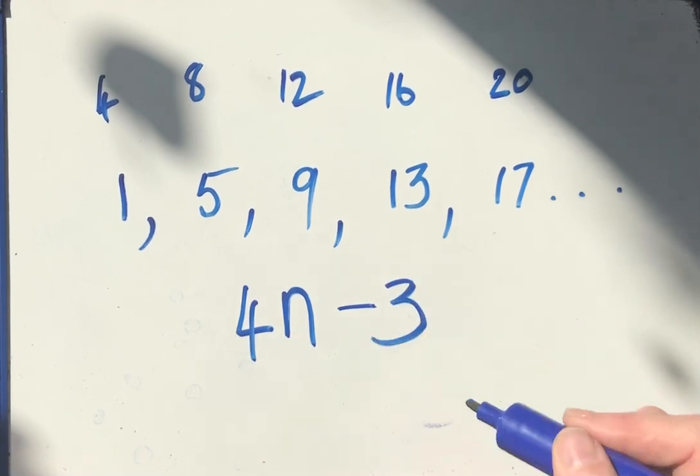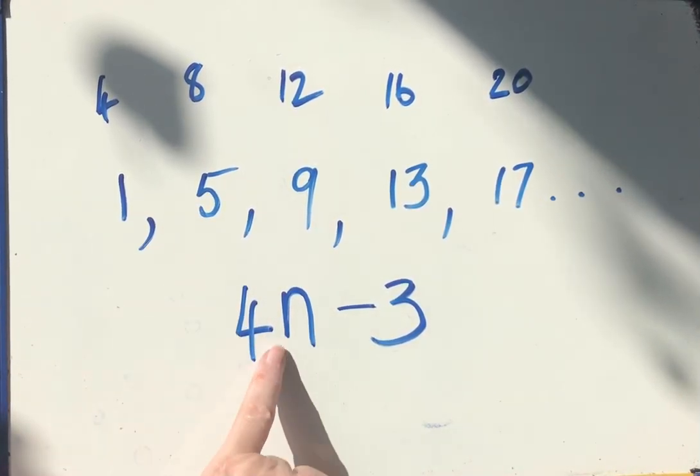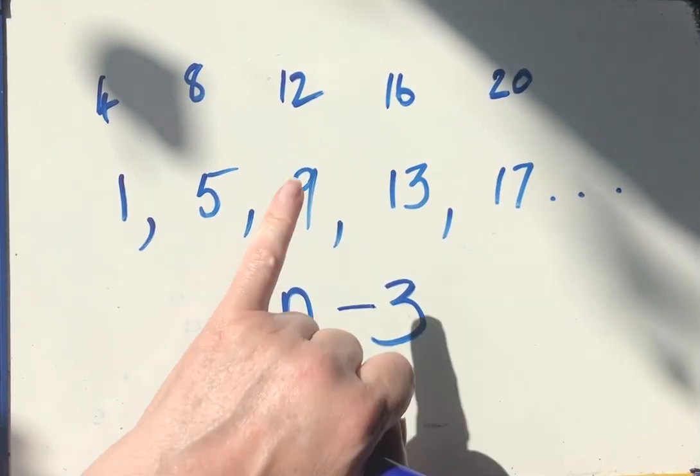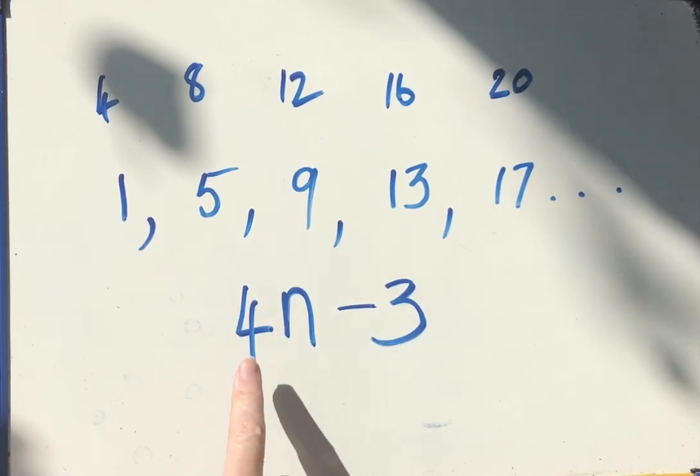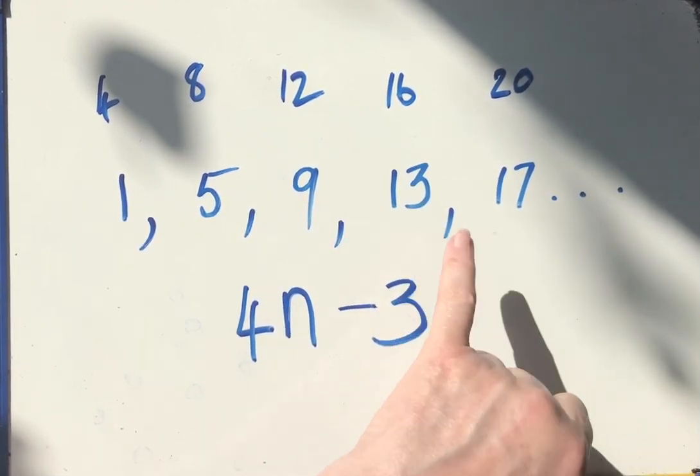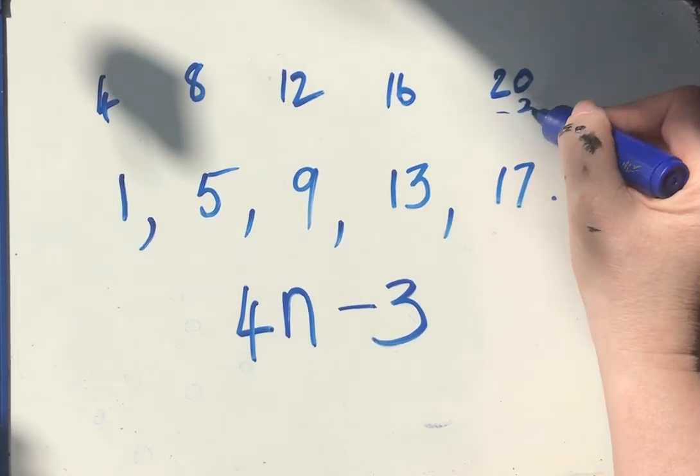4 times 1 is 4, take away 3 is 1. 4 times 2 is 8, take away 3 is 5. 4 times 3 is 12, take away 3 is 9. 4 times 4 is 16, take away 3 is 13. 4 times 5 is 20, take away 3 is 17.